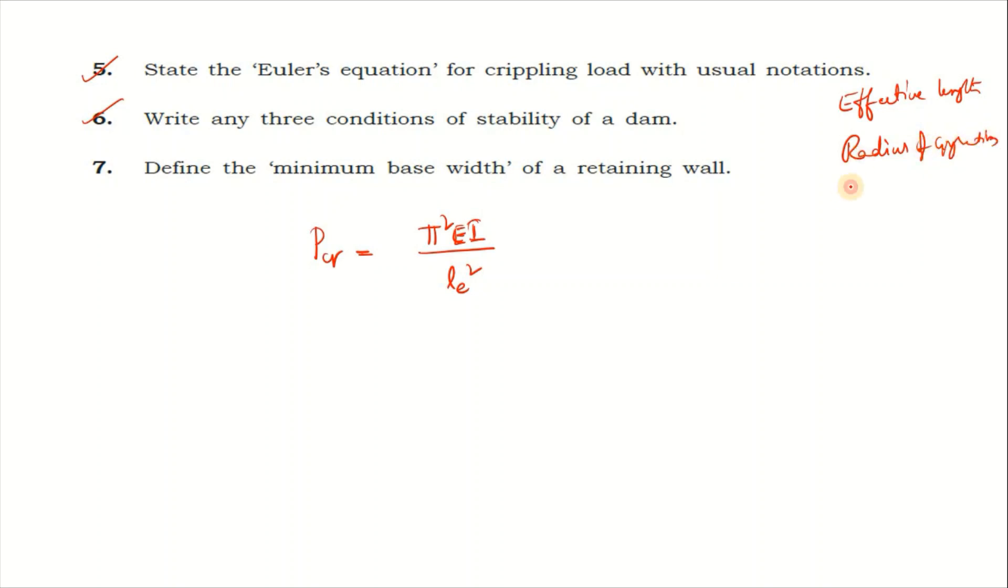Next: radius of gyration, slenderness ratio, definitions. Long column, short column differences.